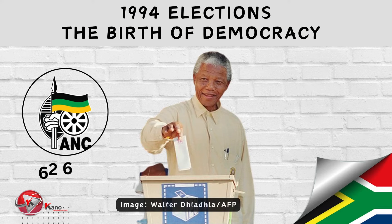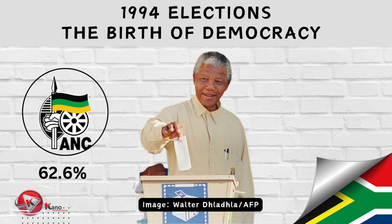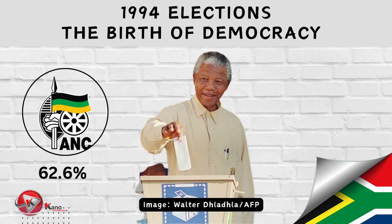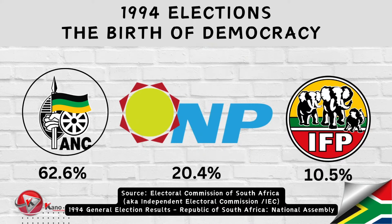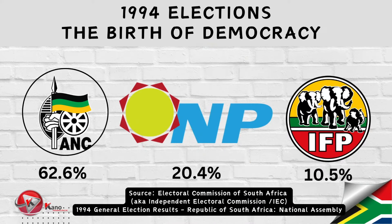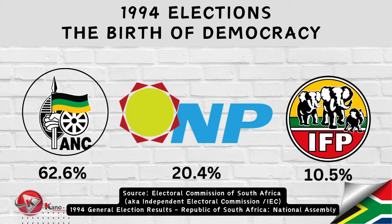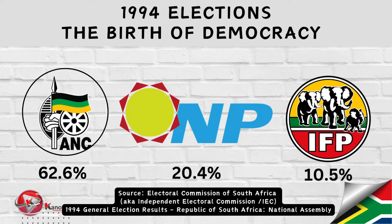The African National Congress, led by the then-party president Nelson Mandela, emerged victorious, winning the national results by over 62 percent. This was followed by the National Party, the Inkatha Freedom Party, the Freedom Front, the Democratic Party, the Pan-Africanist Congress of Azania, and the African Christian Democratic Party, which all managed to garner enough votes to be represented in the first democratically elected National Assembly.